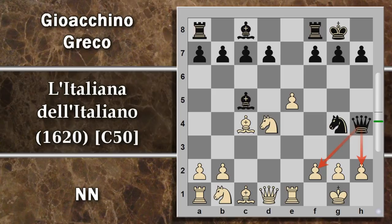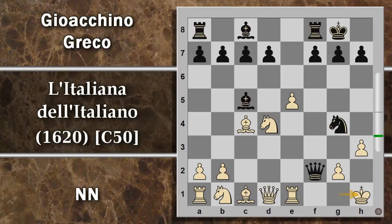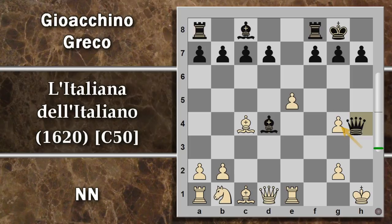La sua mossa è Donna H4, con minacce di entrate pesantissime sul re. Ora il povero cavallo si pente di essere andato via da F3, dove avrebbe difeso egregiamente il proprio re. Qui è un momento di bilanci: per il bianco è impossibile parare entrambe le minacce. Sembra quella in H2 la più pericolosa, perché la donna entra dal lato dove non ci sono altre difese. Se si difende semplicemente con H3, c'è Donna per F2, il re si sposta, dopodiché cade il cavallo. Il bianco non si può neanche rifare sul cavallo G4, perché la donna deve difendere la torre e se si prende di pedone c'è matto alla successiva.